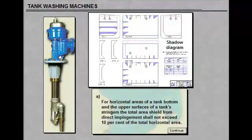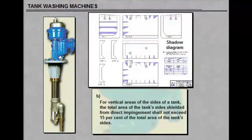For vertical areas of the sides of a tank, the total area of the tank's sides shielded from the direct impingement shall not exceed 15% of the total area of the tank's sides.